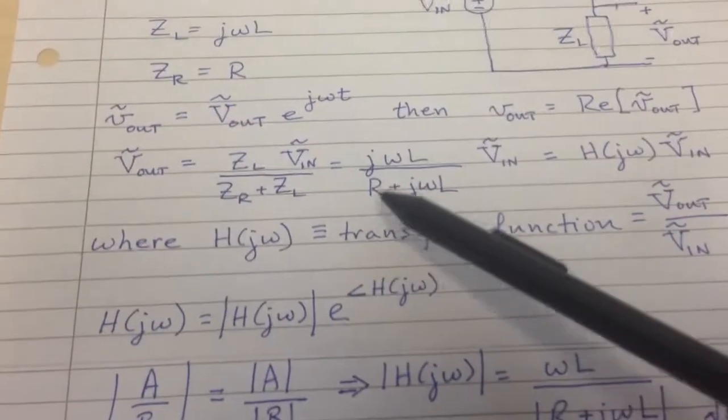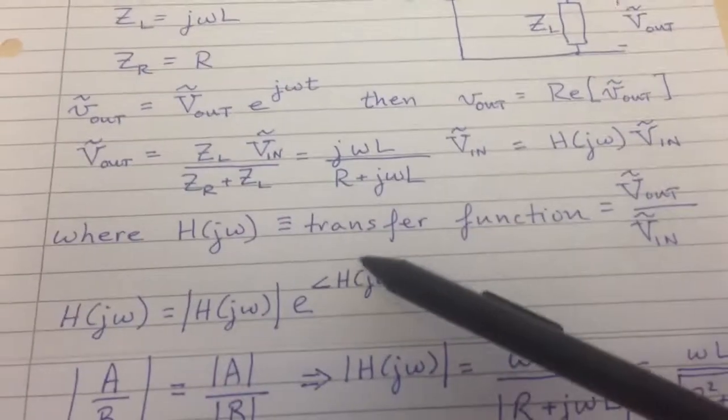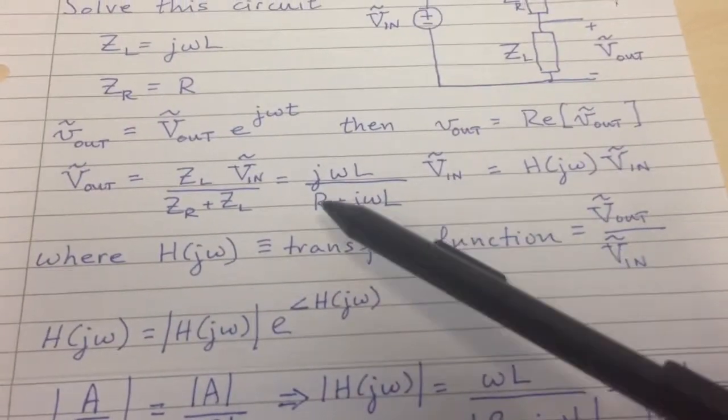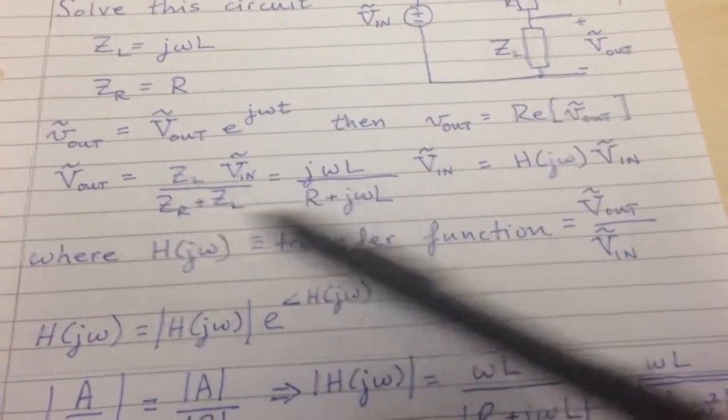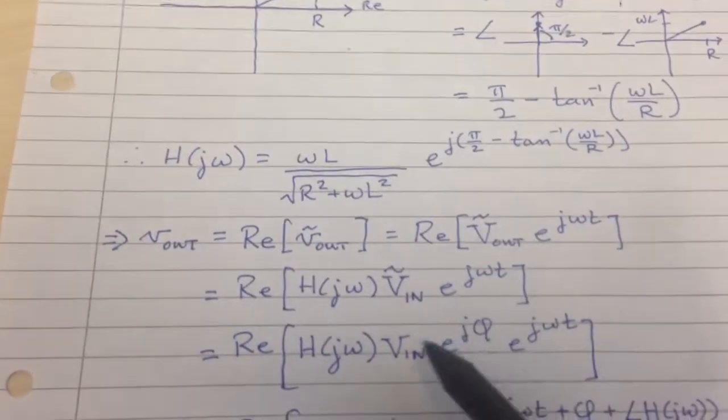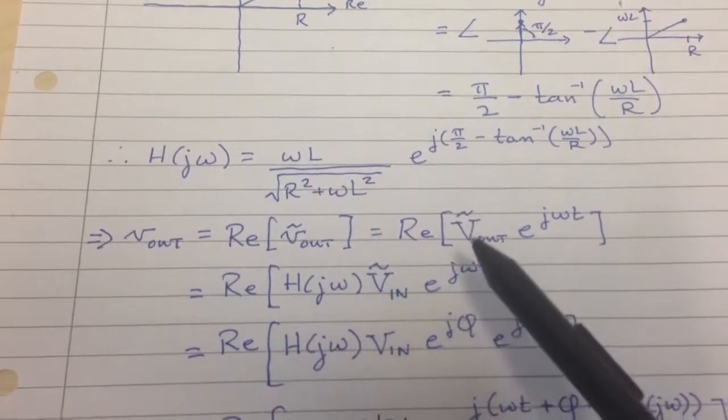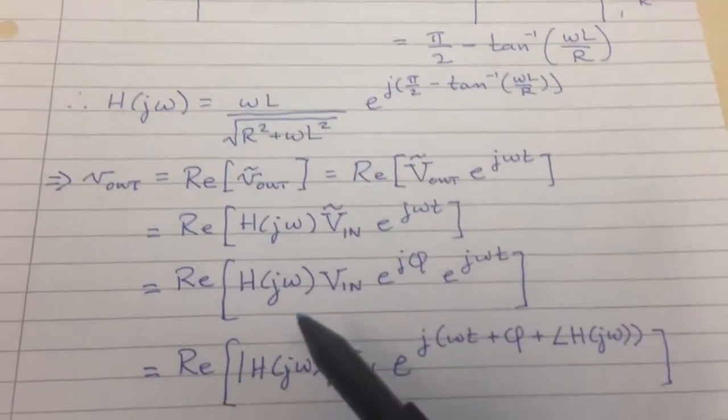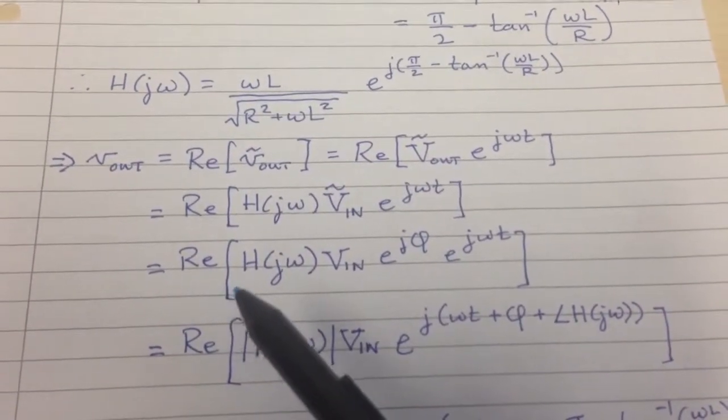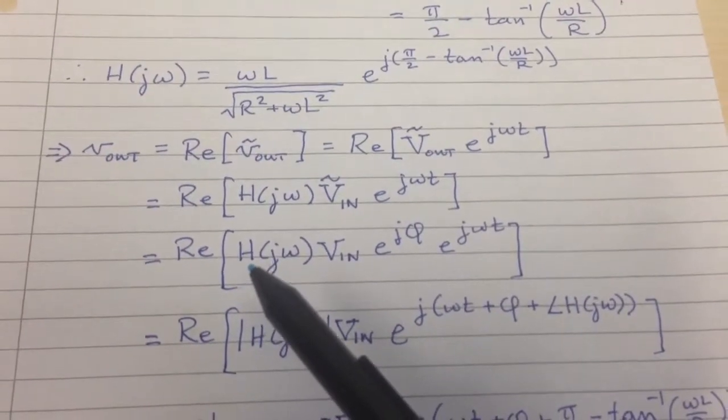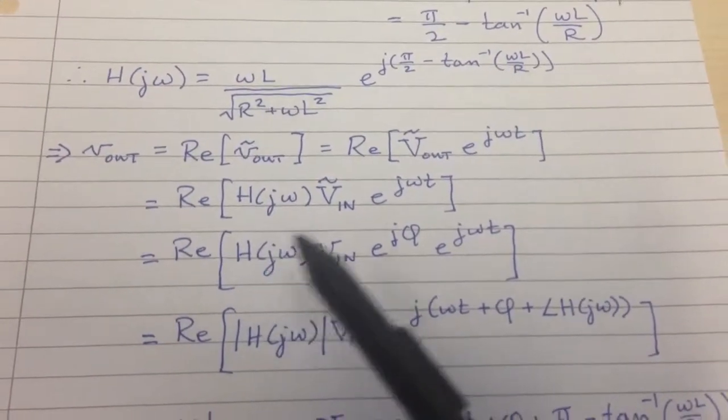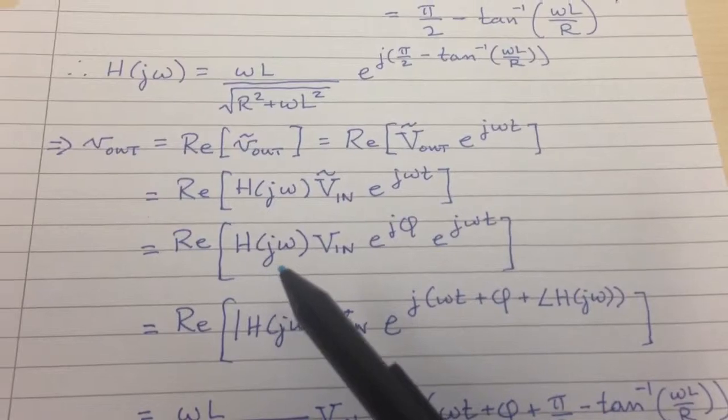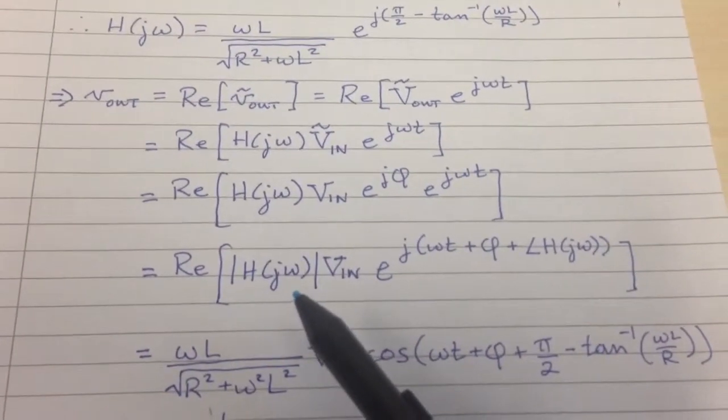But we just solved up here for, and showed here that it's equal to, that that capital V_out was equal to H(jω) times V_in. So plugging in down here, we get that H(jω) V_in for that V_out term. Now the real part, the easiest way to find this is going to be to put the H(jω) into the polar notation, which is why we went to the whole trouble of doing that.